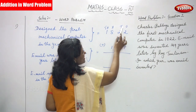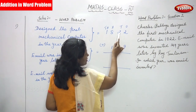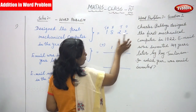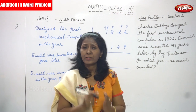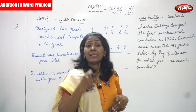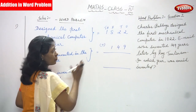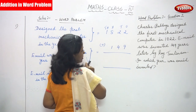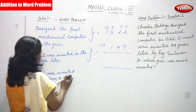You have to write the place value first: ones, tens, hundreds, thousands. The first mechanical computer was invented in the year 1822 — so two in ones place, two in tens place, eight in hundreds place, one in thousands place. After that, 149 years later email was invented, so we add 149. This is a normal addition — we add downward.